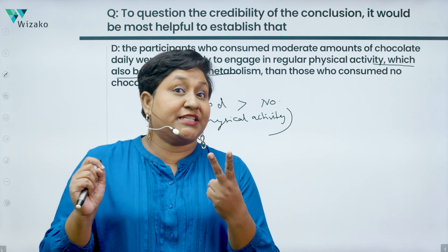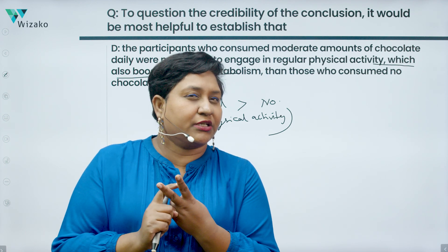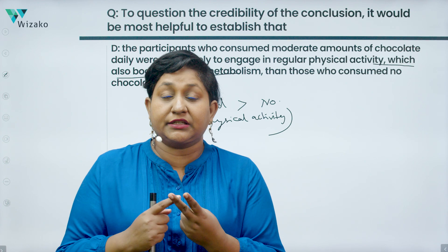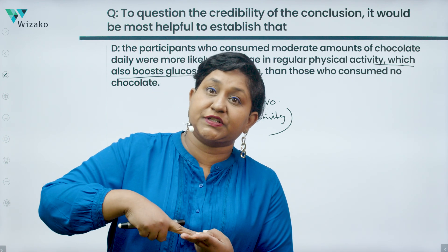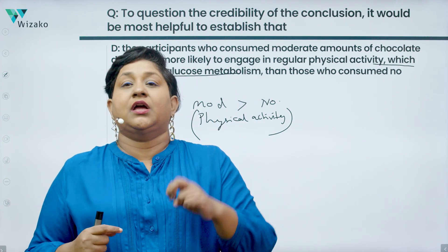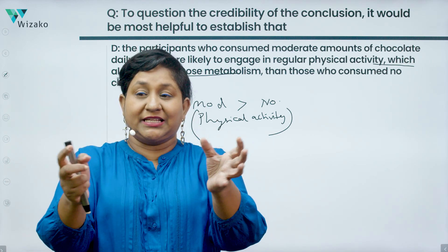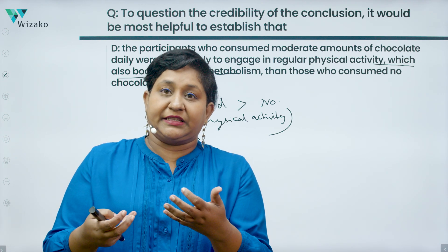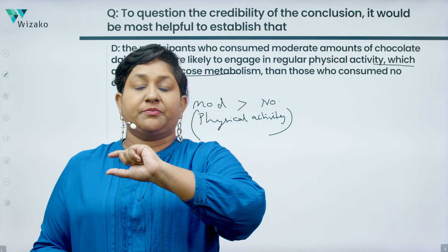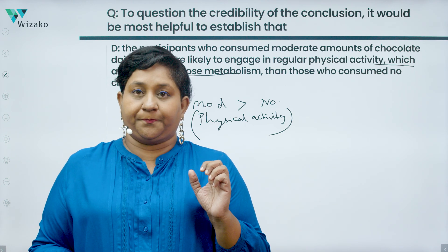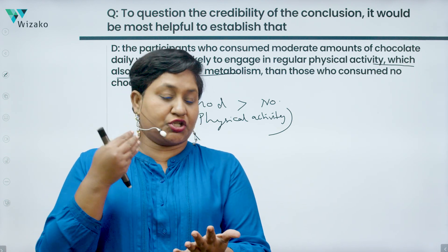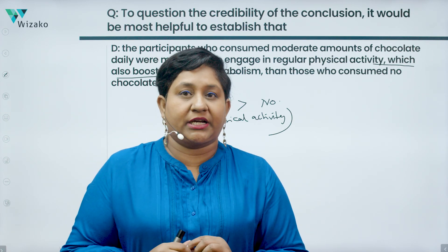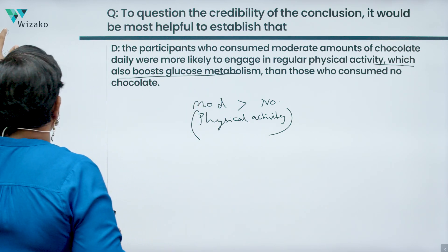So now you can't say with confidence that chocolate alone is responsible for the increase in glucose metabolism and therefore the decrease in risk — it could have been the physical activity. This points out an uncontrolled factor between the two groups that is important because it also impacts diabetes risk. It targets both the causal relationship and the comparison relationship simultaneously, making it a very on-point answer. We'll hold on to D and have a quick look at E.